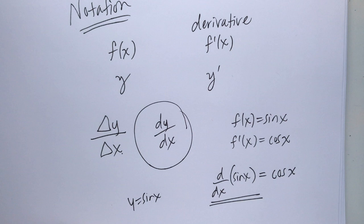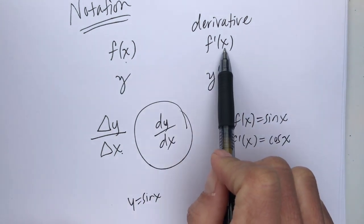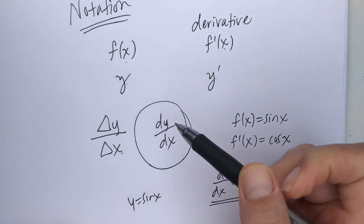So, nothing to be really worried about. If this feels really funky, we're going to just keep practicing it. But just know that if f of x is a function, the derivative is notated as f prime x. If y is a function, the derivative is y prime.